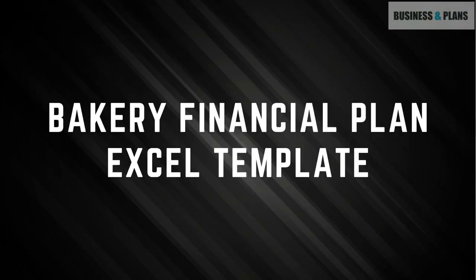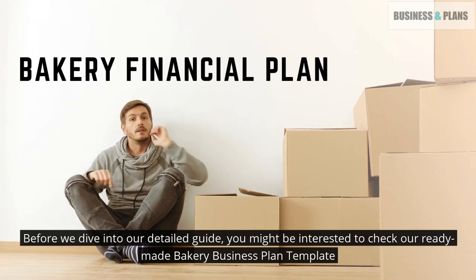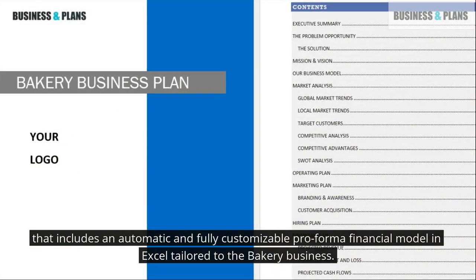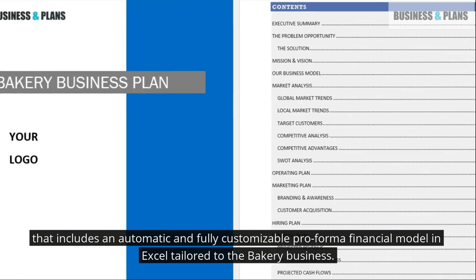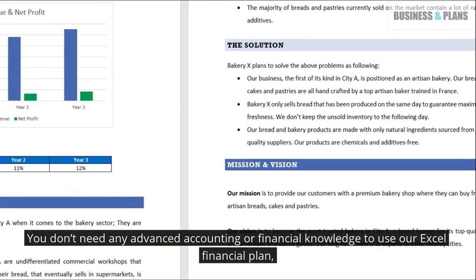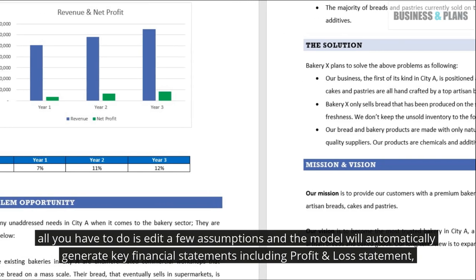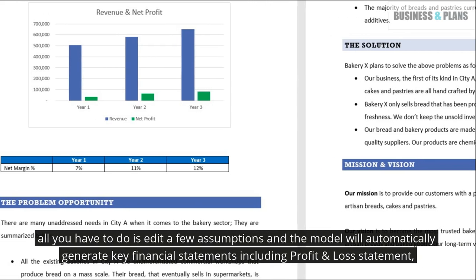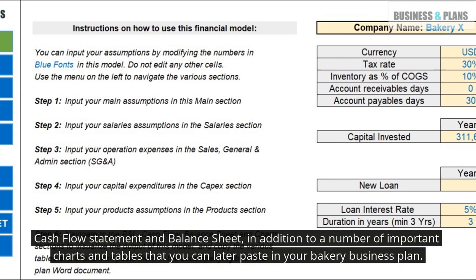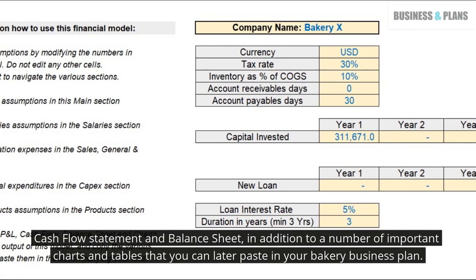Before we dive into our detailed guide, you might be interested to check our ready-made bakery business plan template that includes an automatic and fully customizable pro forma financial model in Excel tailored to the bakery business. You don't need any advanced accounting or financial knowledge to use our Excel financial plan. All you have to do is edit a few assumptions and the model will automatically generate key financial statements including profit and loss statement, cash flow statement, and balance sheet, in addition to a number of important charts and tables that you can later paste into your bakery business plan.